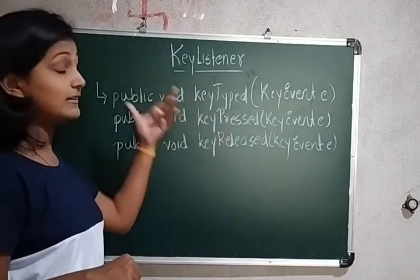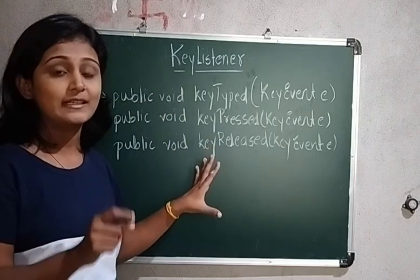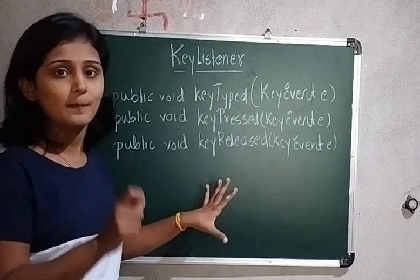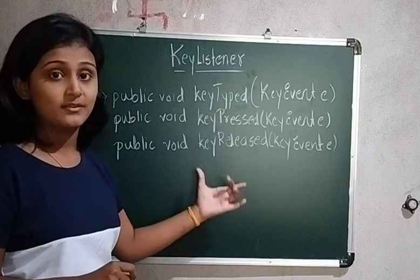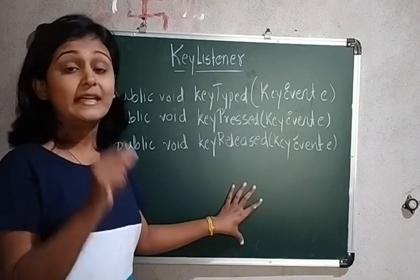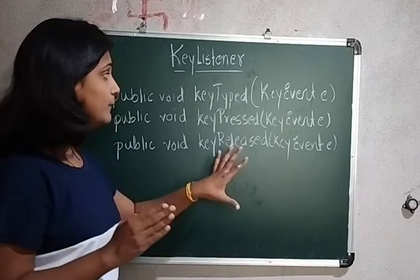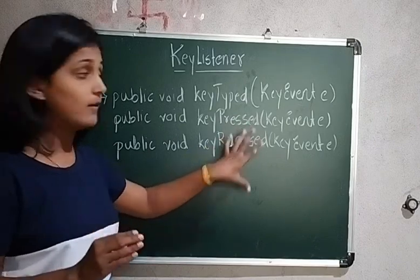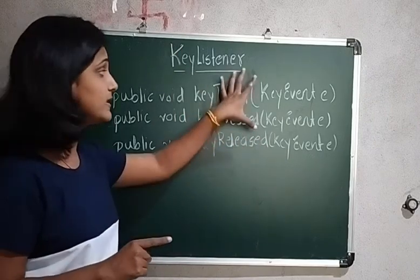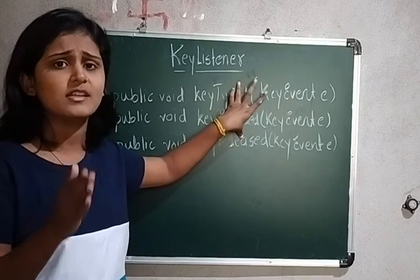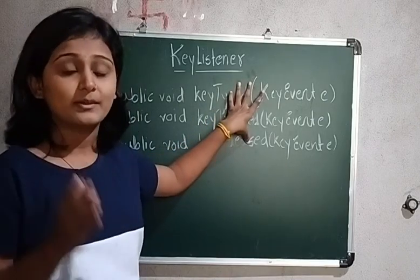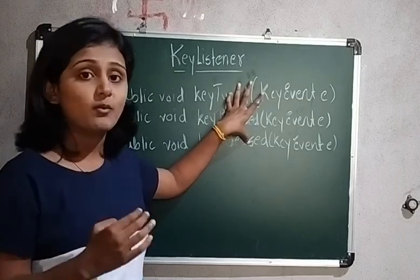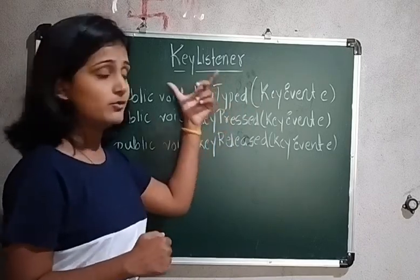Now if you see the methods, there are three methods in this listener. You have to override all three methods compulsory: keyTyped, keyPressed, and keyReleased. Even if you only want to use the keyReleased method, you still have to override the remaining two with an empty body, just as with abstract classes where abstract methods must all be overridden.